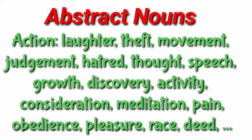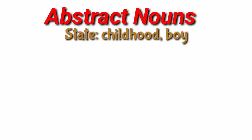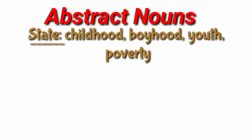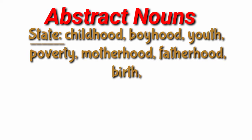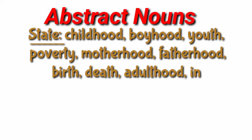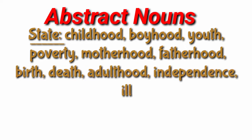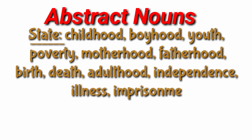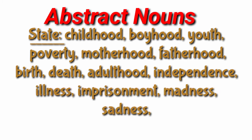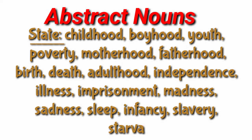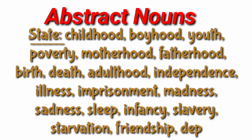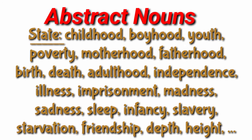Let us see abstract nouns that indicate state: Childhood, Boyhood, Youth, Poverty, Motherhood, Fatherhood, Birth, Death, Adulthood, Independence, Illness, Imprisonment, Madness, Sadness, Sleep, Infancy, Slavery, Starvation, Friendship, Death, Height. These are abstract nouns which show states.